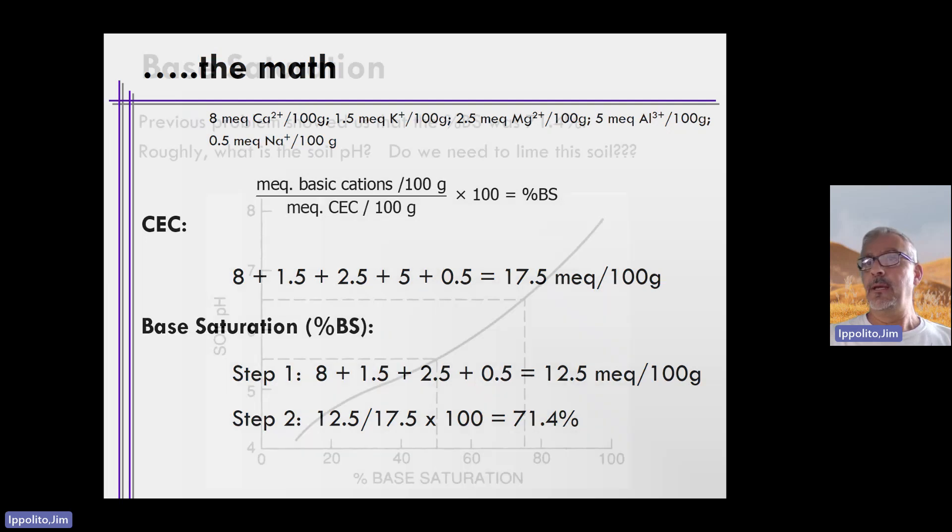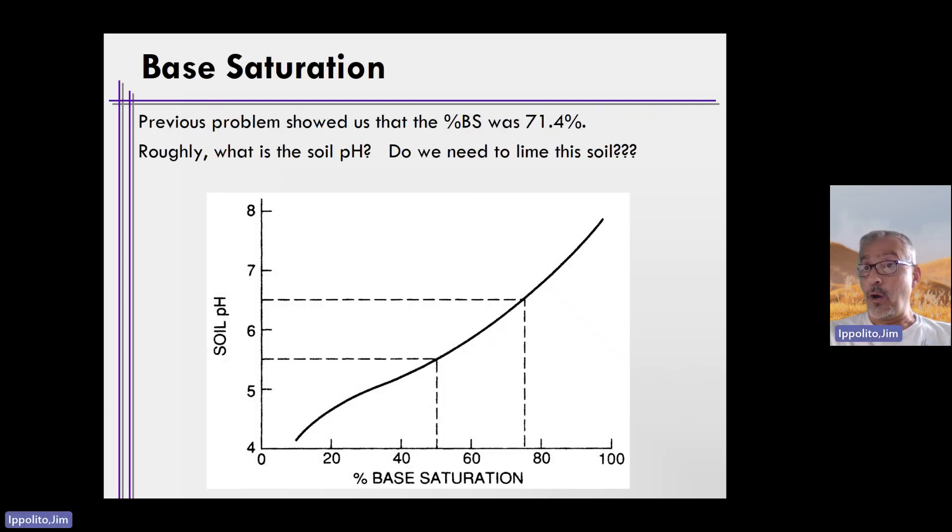So that's the base saturation. Here's that curve. The previous problem showed us that there was 71% base saturation. So what's the pH? 71% is roughly where this point is. And if you go up to the curve and over, it's 6.5.